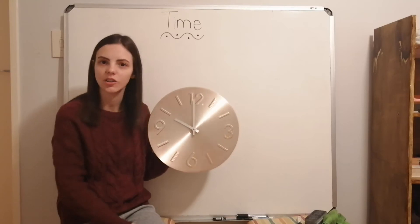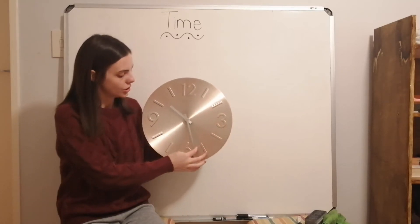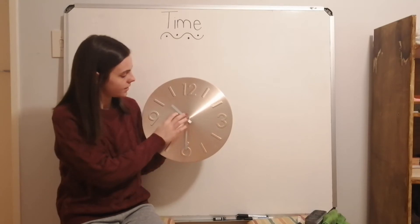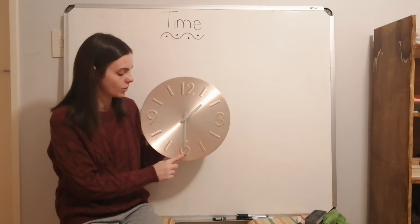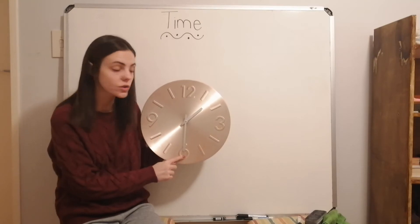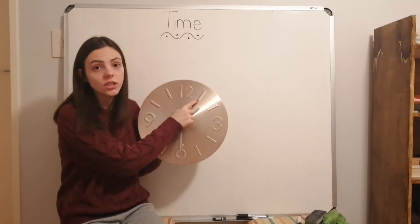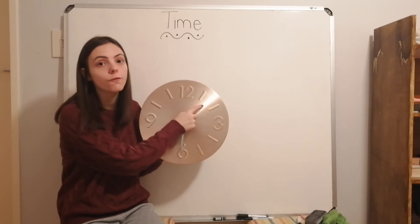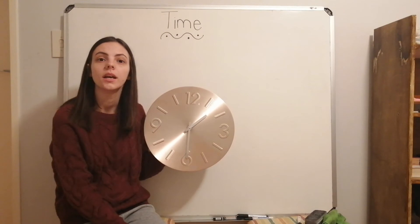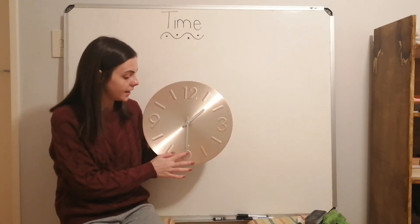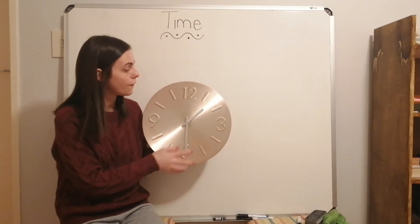I can also ask you about half hours. The long hand is on the six, so it's half past, and the short hand is just past the one — so it's half past one. Now, the netball match or the rugby match started at half past one and it lasted one hour. What time did it finish?